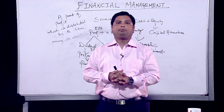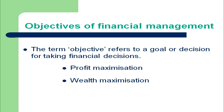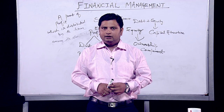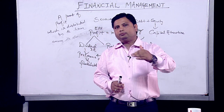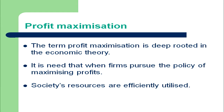The last topic of Part 1 is the objectives of financial management. There are two broad objectives: profit maximization and wealth maximization. Profit maximization has been discarded and wealth maximization has been adopted by financial management for a long period of time. We should understand what profit maximization is, why it was rejected, and what qualities of wealth maximization led to its adoption.